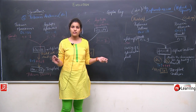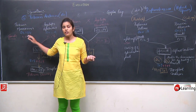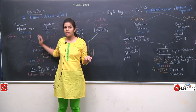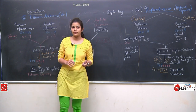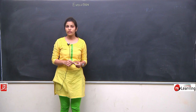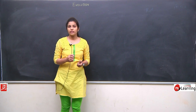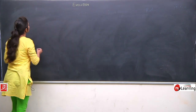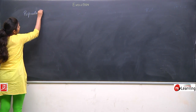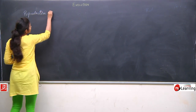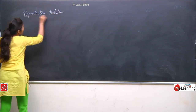Here we formed a tetraploid species Raphanobrassica, and here we formed a hexaploid species Triticum aestivum — the wheat we are eating now. In the next topic, we will discuss about reproductive isolation and its role in speciation.